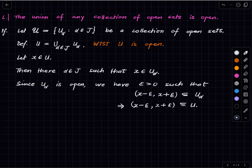That proves U is open. So the union of any collection of open sets is open. To summarize the properties: the empty set is open; the intersection of any finite collection of open sets is open; the union of any collection of open sets is open; and the set of all real numbers ℝ is also open.